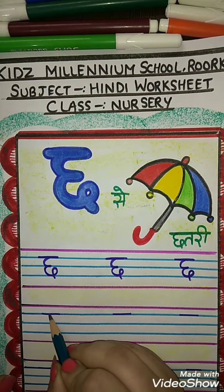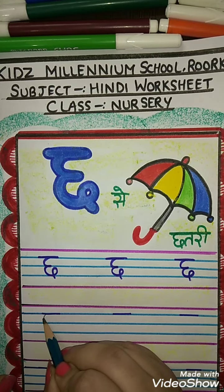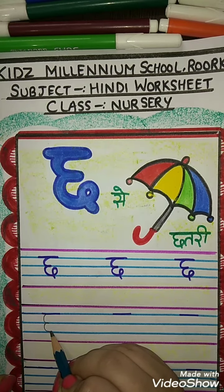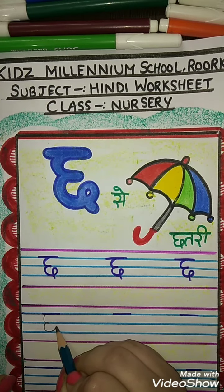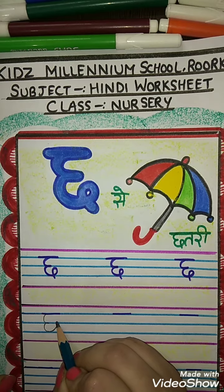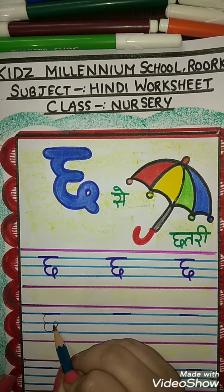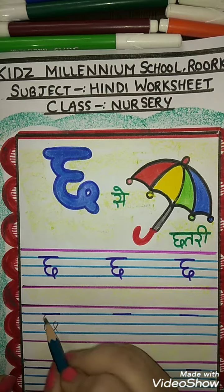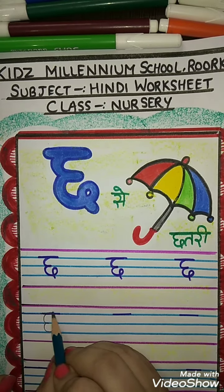First make a half curve, joining with another curve. Bring it to the blue line. Then make a curve like this, bring it down. Chh se Chhatri.